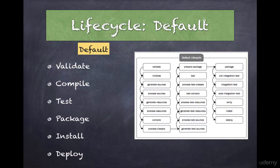Maven has three build lifecycles. The first one is called the default, which we are looking at right now. This lifecycle handles the compiling, packaging, and deployment of a Maven project. To better understand the build lifecycle and its phases, let's take a look at some of the phases associated with the default lifecycle.